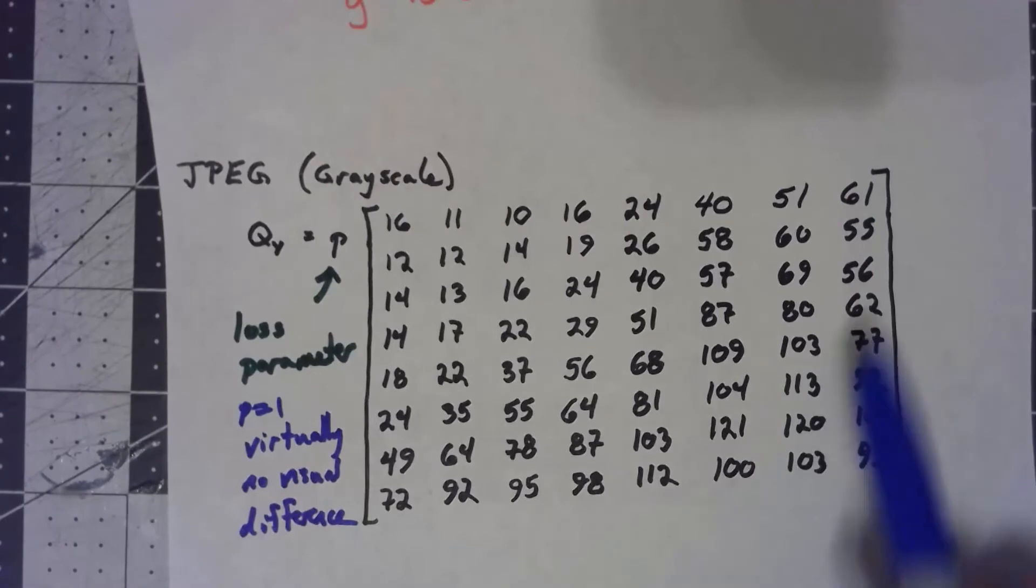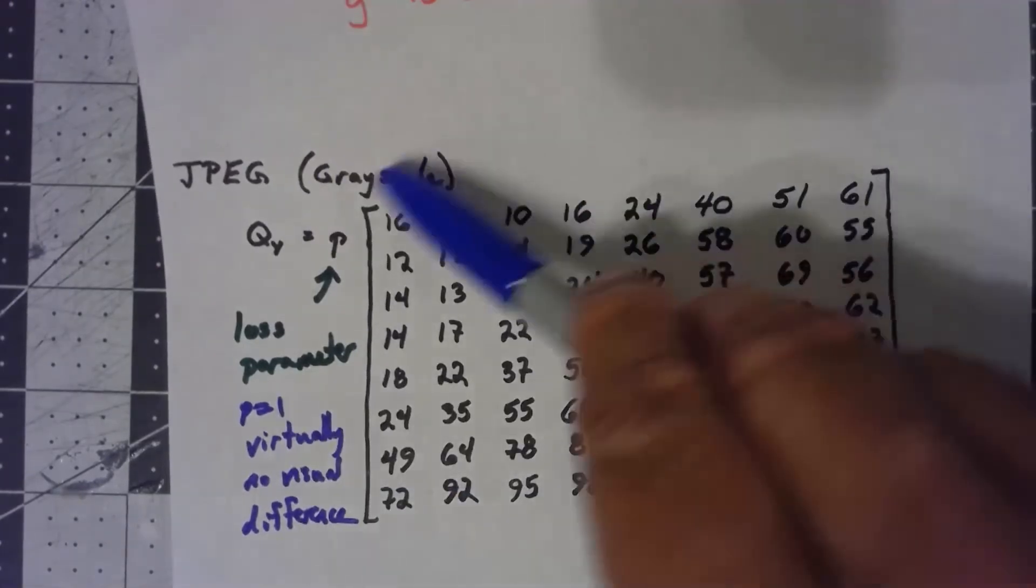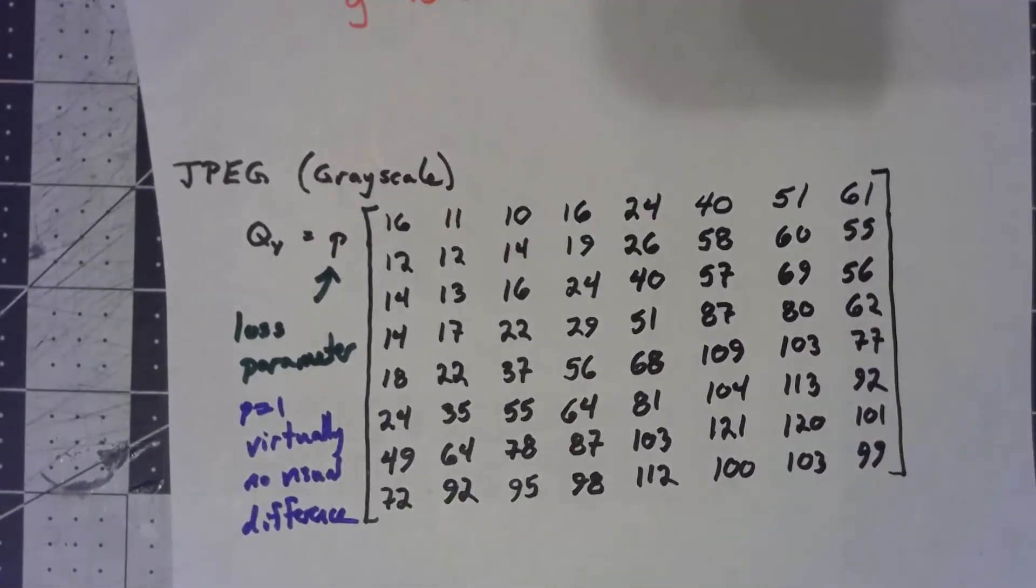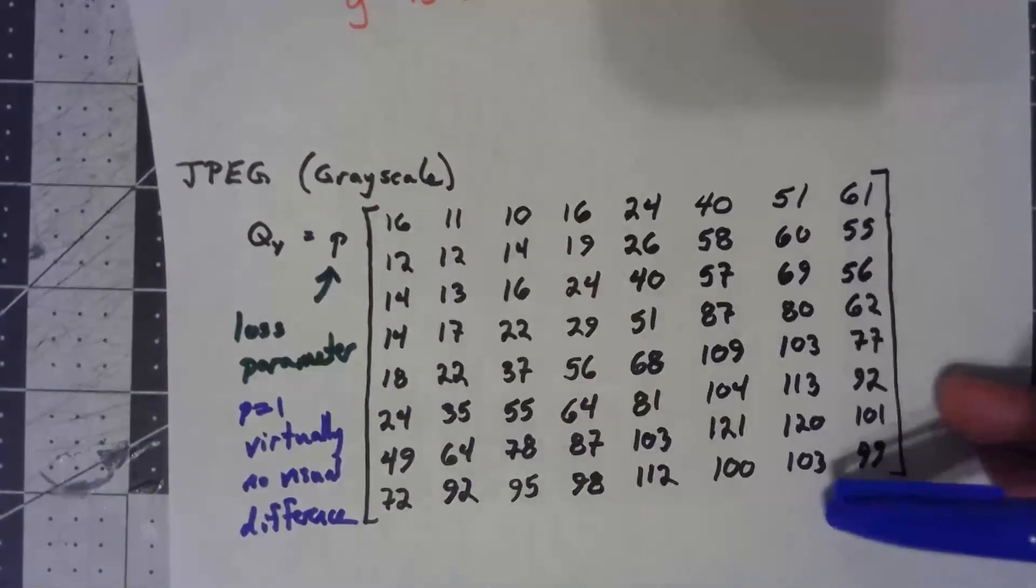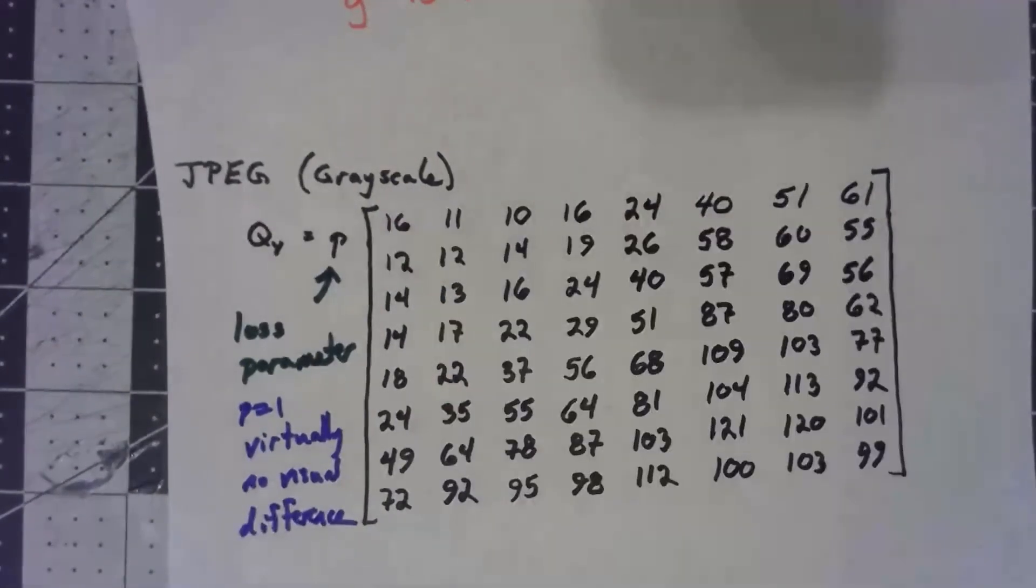So how would you use this thing? Well, quite simply, each entry in your DCT'd matrix, you're going to go ahead and quantize with the appropriate value. So again, you're not doing a full matrix multiplication. You're going entry by entry, dividing them and rounding them off.